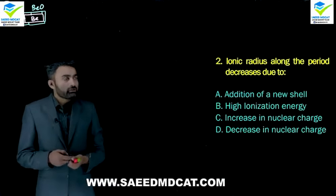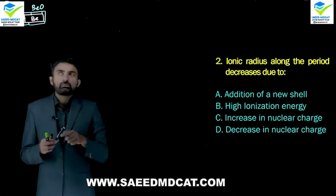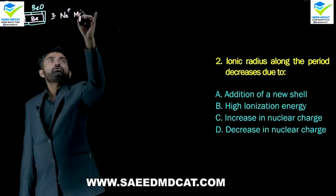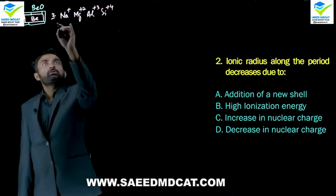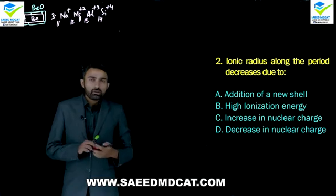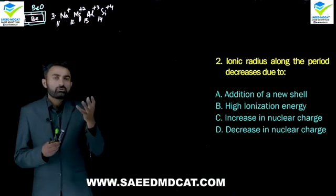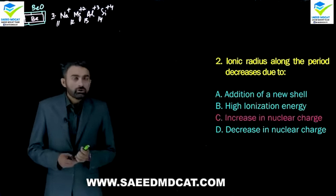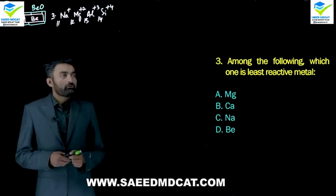Question 2: Ionic radius along the period decreases. If we compare along the period — sodium plus one, magnesium plus two, aluminium plus three, silicon plus four — atomic numbers go eleven, twelve, thirteen, fourteen. Left to right for isoelectronic cations and anions, nuclear charge keeps increasing, and increased nuclear charge increases the nucleus's pull on electrons. Due to this increase in nuclear charge, the ionic radius keeps decreasing.